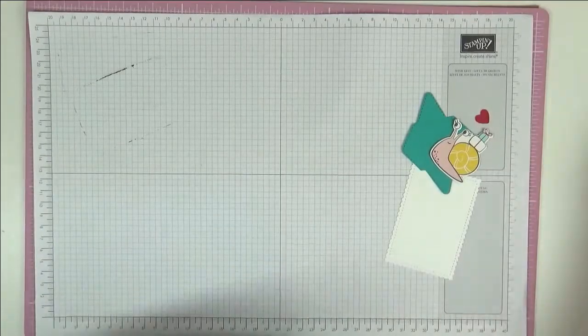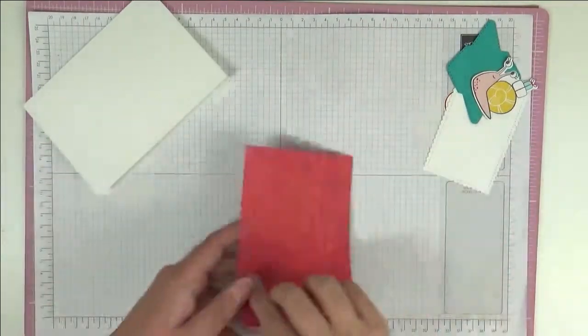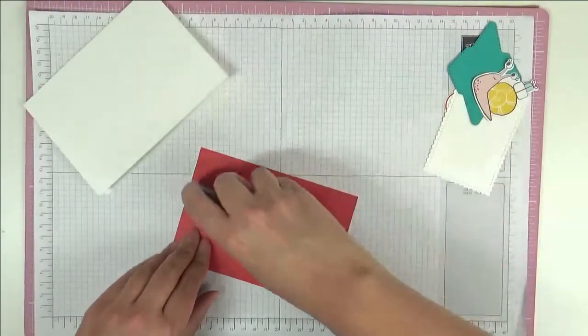Okay so we've cut all our pieces out so now we can start to assemble. So I've got a card base here that's thick basic white and it's a standard A6 card base that's an A4 sheet cut in half and then folds in half.